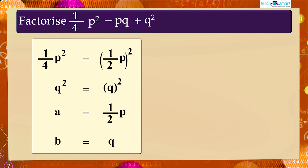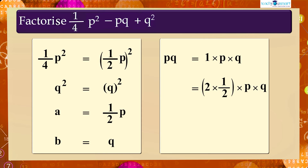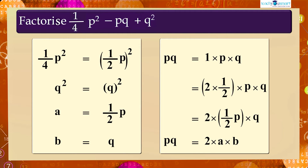Now we have to check whether the middle term can be expressed in terms of a and b. We can write pq as: pq equals 1 × p × q, which equals 2 × (1/2)p × q, which is equal to 2 × a × b.